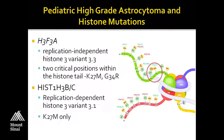The gene they found to be mutated is called H3F3A, which encodes for a replication-independent histone 3 variant 3.3. They found two mutations in that gene: one at K27, where the lysine becomes a methionine, and the other at G34, where it becomes an arginine.